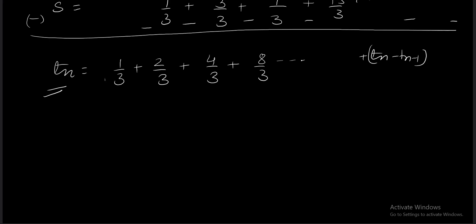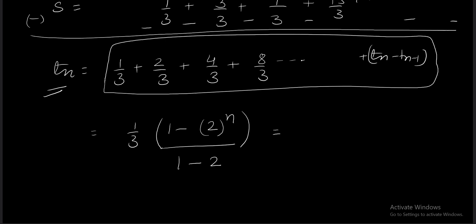If you observe carefully, you'll find that it's a GP with n terms, common ratio 2, and first term 1/3. The sum is a(1 - r^n)/(1 - r) = (1/3)(1 - 2^n)/(1 - 2) = -1/3 + (2^n)/3.